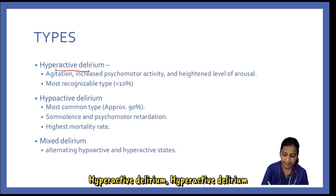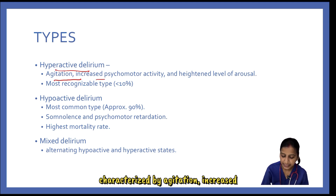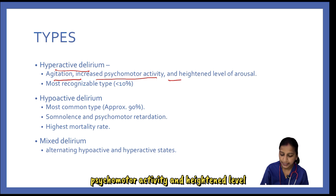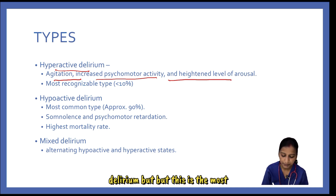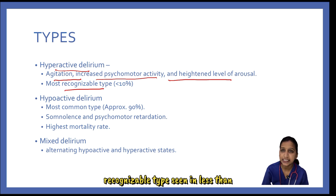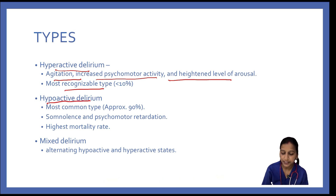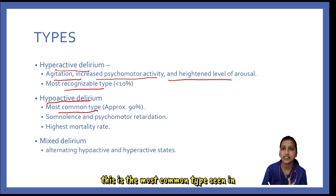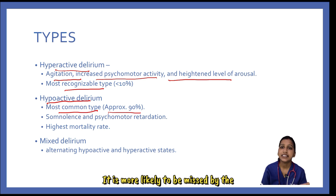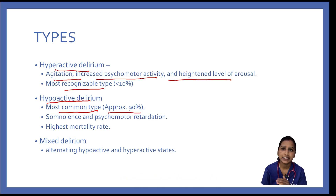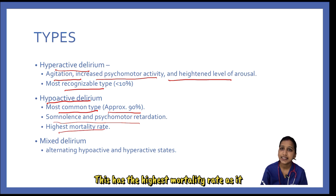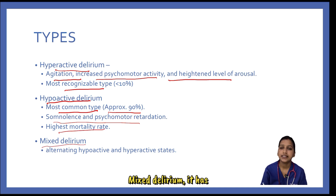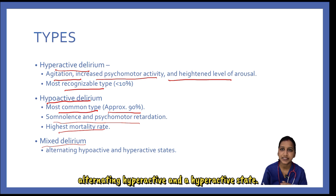Hyperactive delirium is characterized by agitation, increased psychomotor activity, and heightened level of arousal. It is less common than hypoactive delirium and is the most recognizable type, seen in less than 10%. Hypoactive delirium is the most common type, seen in approximately 90%. It is more likely to be missed by the clinician because the patient may be somnolent and unlikely to draw attention to themselves. This has the highest mortality rate as it gets missed. Mixed delirium has alternating hyperactive and hypoactive states.